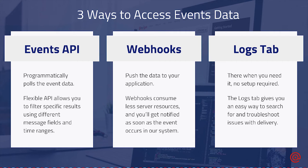Our event data can be accessed in a few different locations: our Events API, webhooks, or the Logs tab of the control panel. Depending on how you want to utilize and get these events will really determine which method you use. Our Events API is a programmatic way to obtain this information from our system — you could use many different programming languages to pull this data whenever you want, or even filter for specific events in the case that you are sending millions of emails.